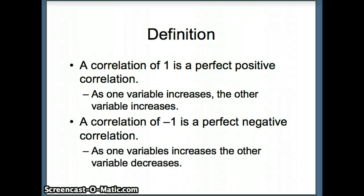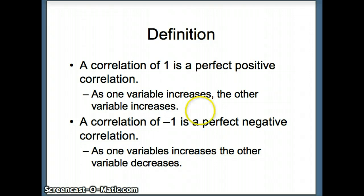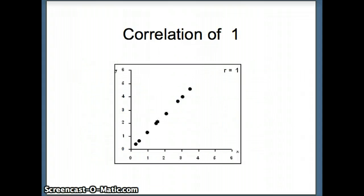A correlation of one is a perfect positive correlation, meaning as one variable increases the other also increases. In this case you can predict the dependent variable completely accurately from the independent variable. Similarly, a correlation of negative one is a perfect negative correlation — as one variable increases the other decreases — and again we can predict the dependent variable exactly from the independent variable.